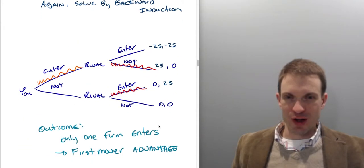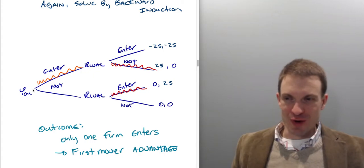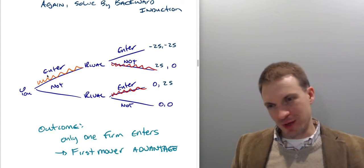Again, solving by backward induction, we go to the end of the game. What's the rival going to do if we enter? Well, they like $0 better than negative $25,000, so they are not going to enter. What's the rival going to do if I don't enter? Well, they like $25,000 better than $0, so they will enter.